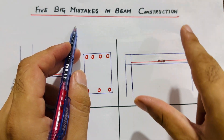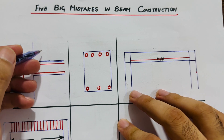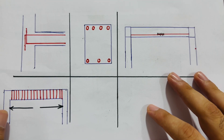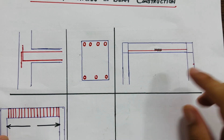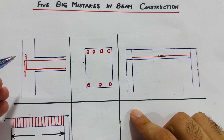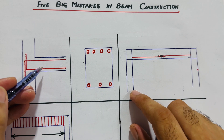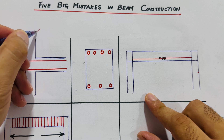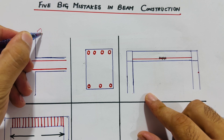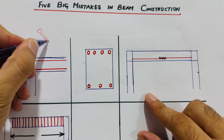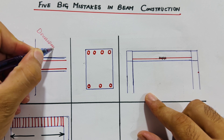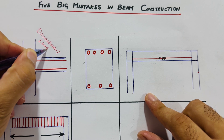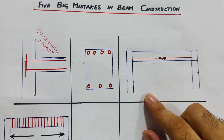The topic is five big mistakes in beam construction. As you can see, this is a beam section with steel reinforcement and two supports. The first mistake is that in many constructions, builders don't provide any development length at the end of the beam. Here I will explain development length.